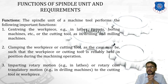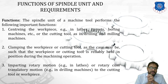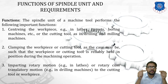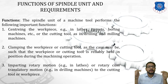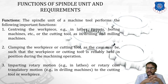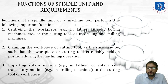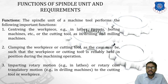First is centering the workpiece. As we know, the spindle unit is purposely used to center the workpiece, and the axis has to be kept steady — vibration should not be there. For that, a tailstock is also used to support the workpiece, for example in the case of a lathe, turrets, boring machines, etc., or the cutting tool as in drilling and milling machines.